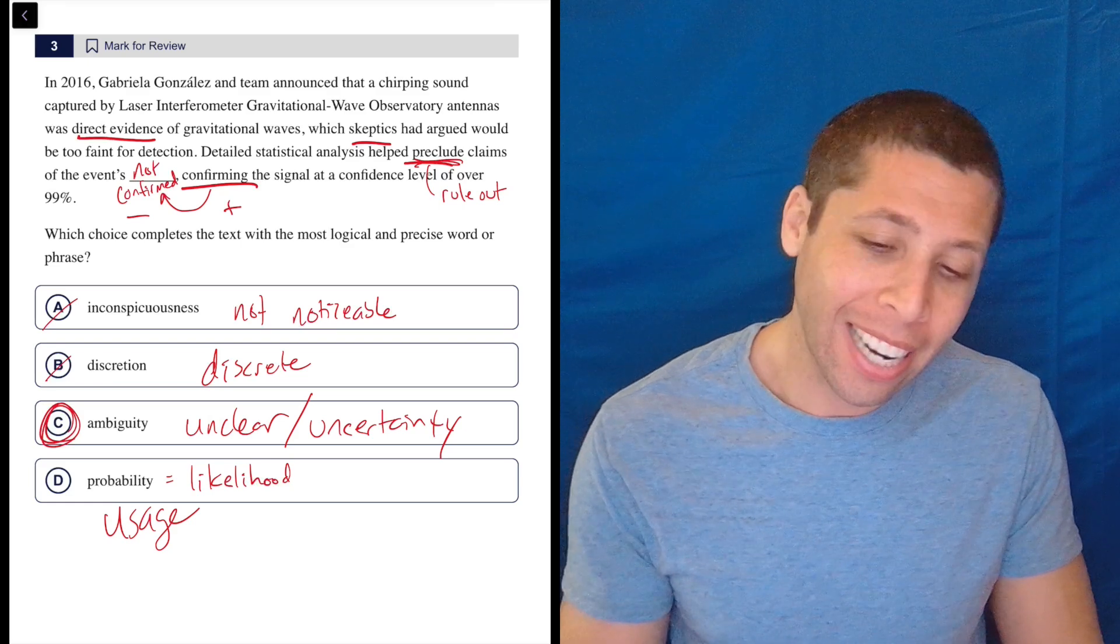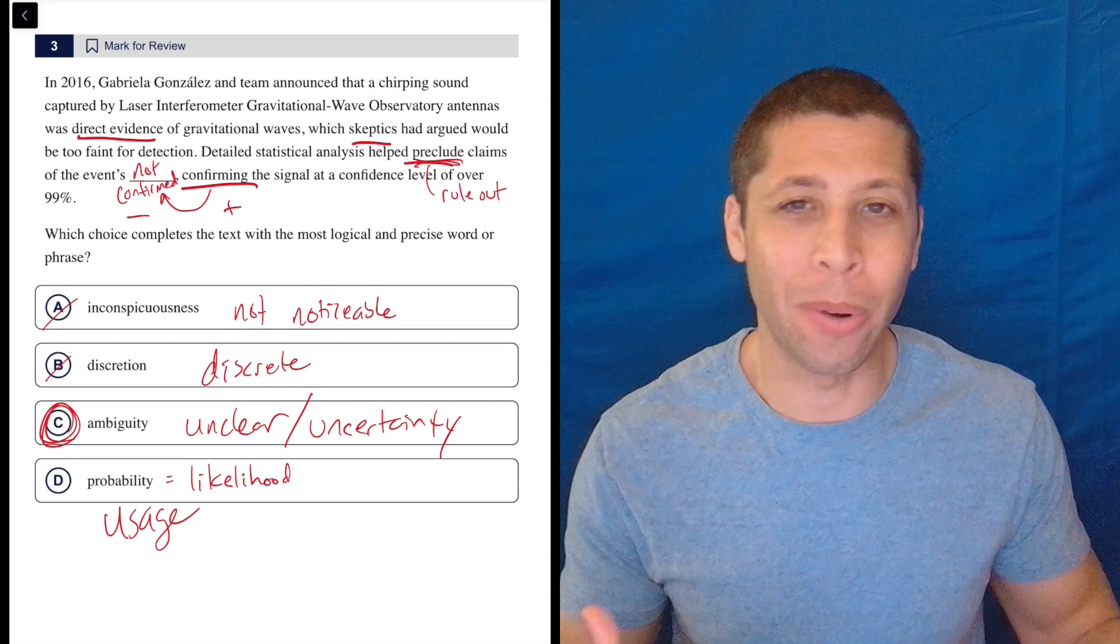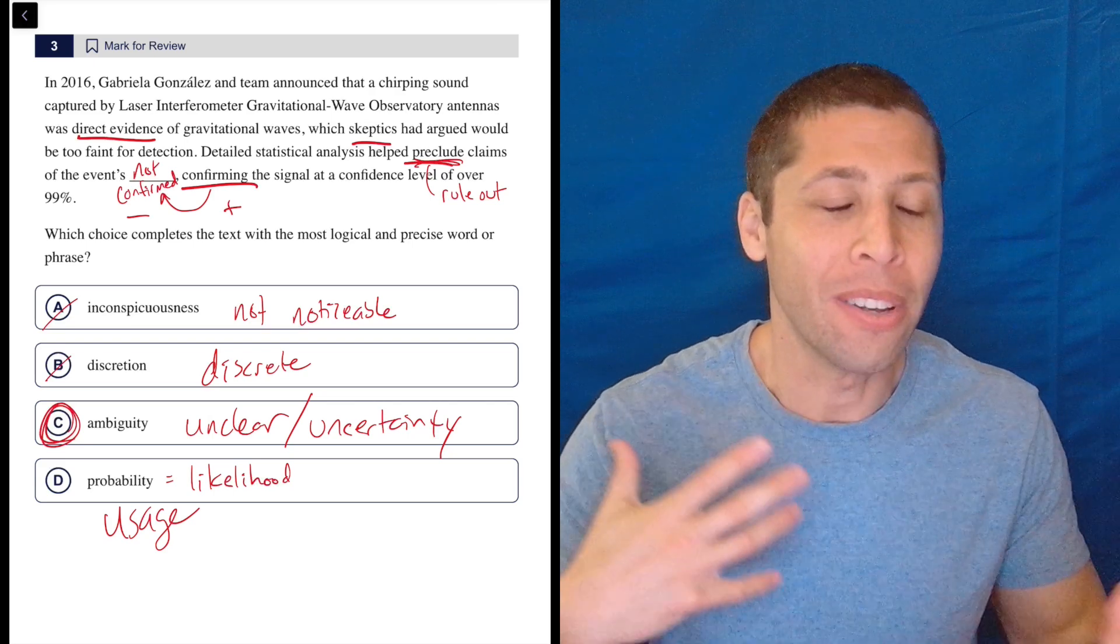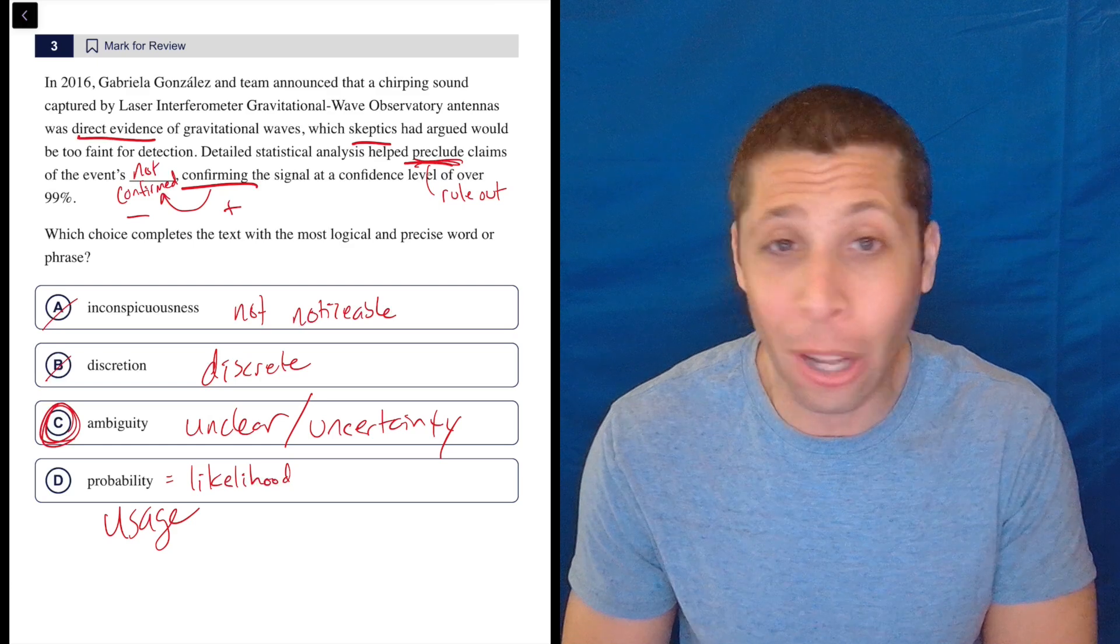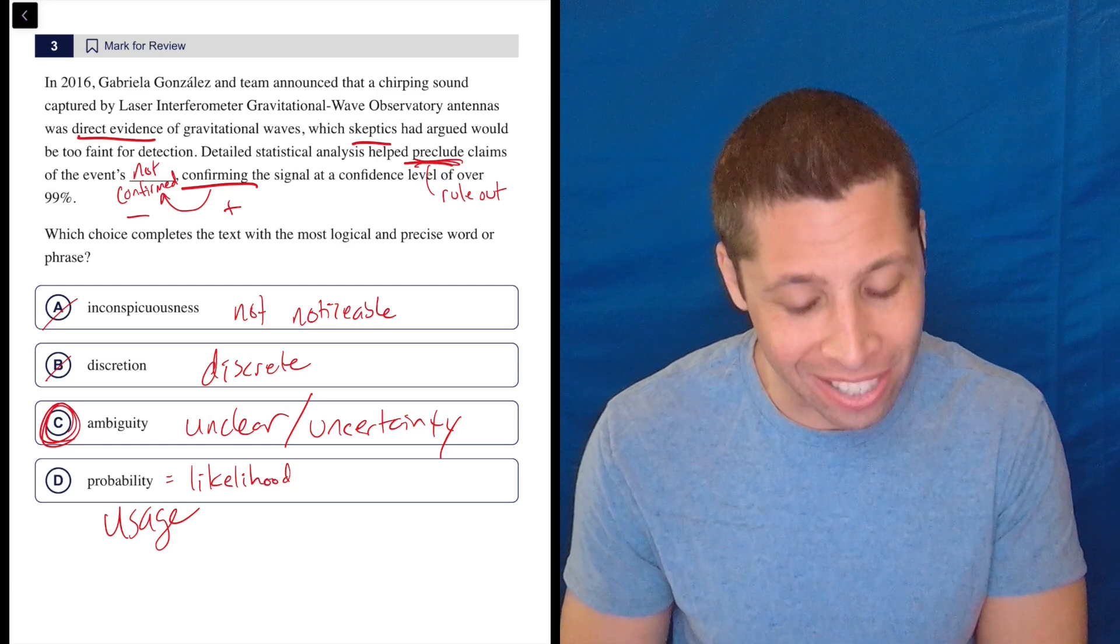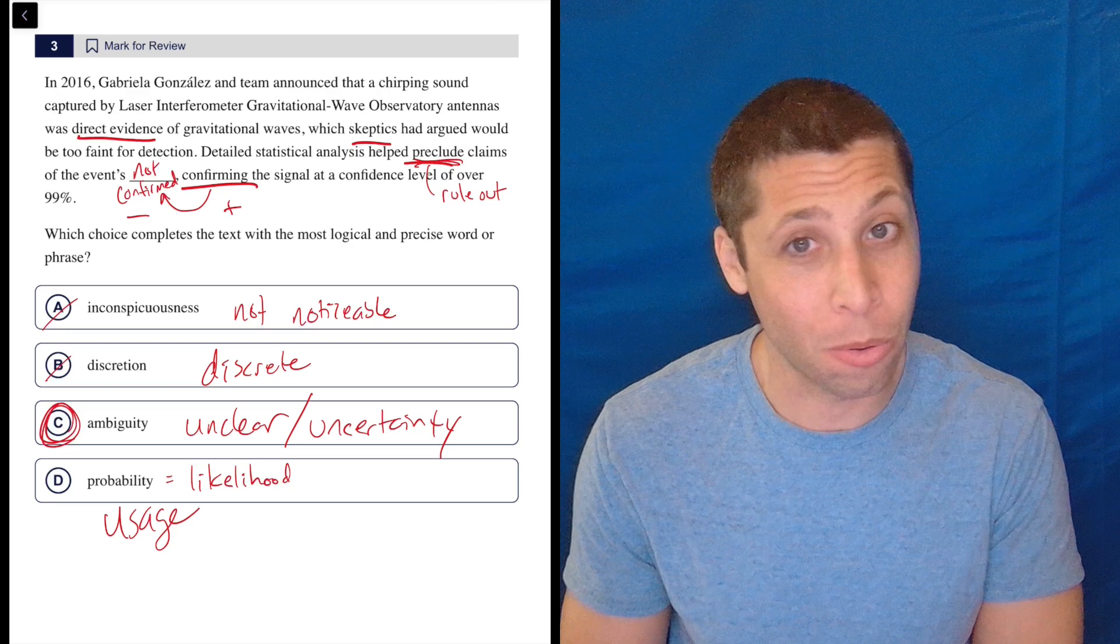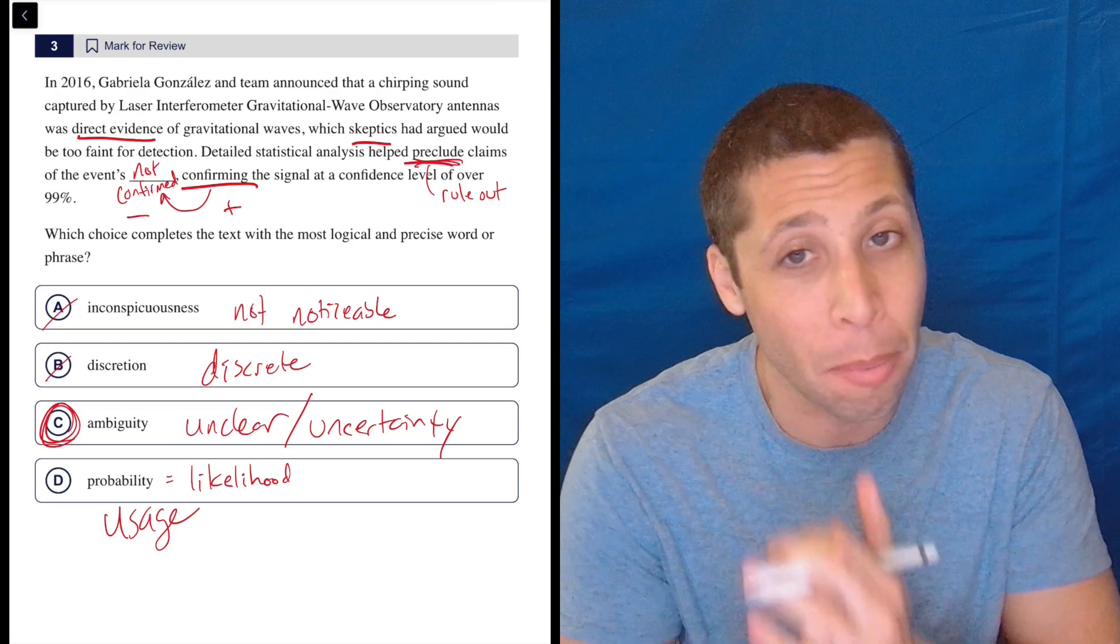So that's sneaky. I think a lot of you, even if you know the definition of probability, you associate it with uncertainty. And so you're going to be tempted into that. But it's not the right choice. This is not close. C is definitely the answer. But I get the difficulty of this question. There are some hard words, but there's also just a lot of twists and turns in the passage itself. That's a double whammy for us.